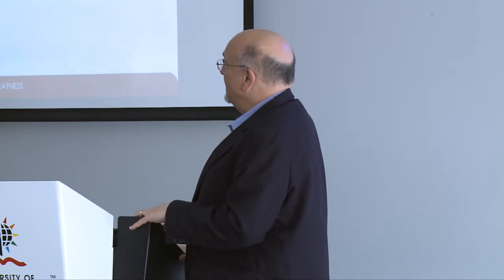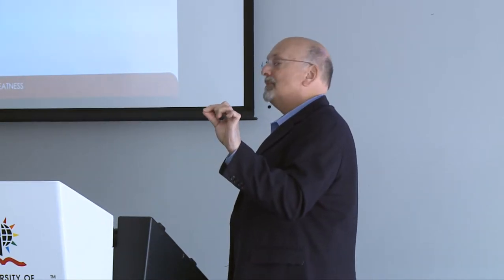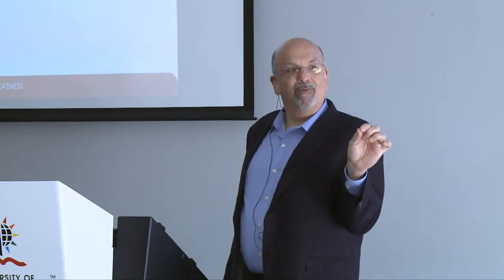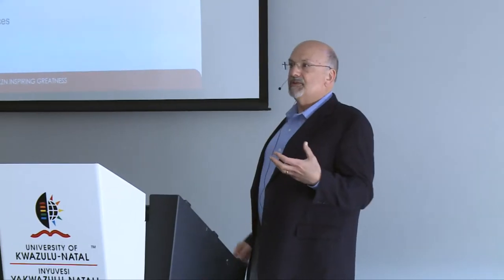Basically, there is elemental data — the atoms, the most primitive stuff on which you build. They have to represent different kinds of numbers in different ways, depending on whether they're whole numbers or fractional, continuous numbers, and so on.